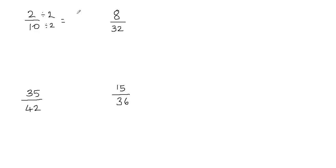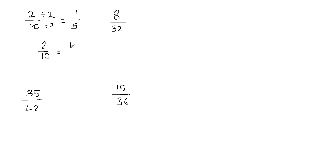2 divided by 2 is equal to 1, and 10 divided by 2 is equal to 5. Notice that the new fraction is equivalent to the original fraction — 2 tenths is equal to 1 fifth. I cannot reduce this fraction anymore. This fraction is in lowest term now because we cannot divide the numerator and the denominator by any other number other than 1. So we know that 2 tenths is equal to 1 fifth.